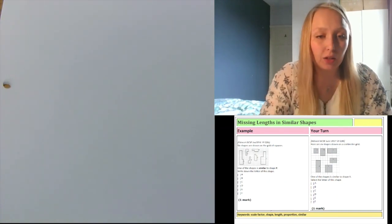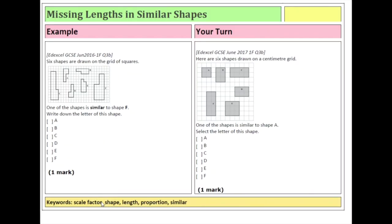Let's have a look at this first example — I'll make it full screen so we can see it properly. On the left hand side, six shapes are drawn on a grid of squares. One of the shapes is similar to shape F. When we use 'similar' in maths, it means one is an enlargement of the other. Shape F is on the right hand side. It's 10 squares high, its base is four squares along, it has a mid-height of six squares where it widens, and then a narrow bit with a height of four squares.